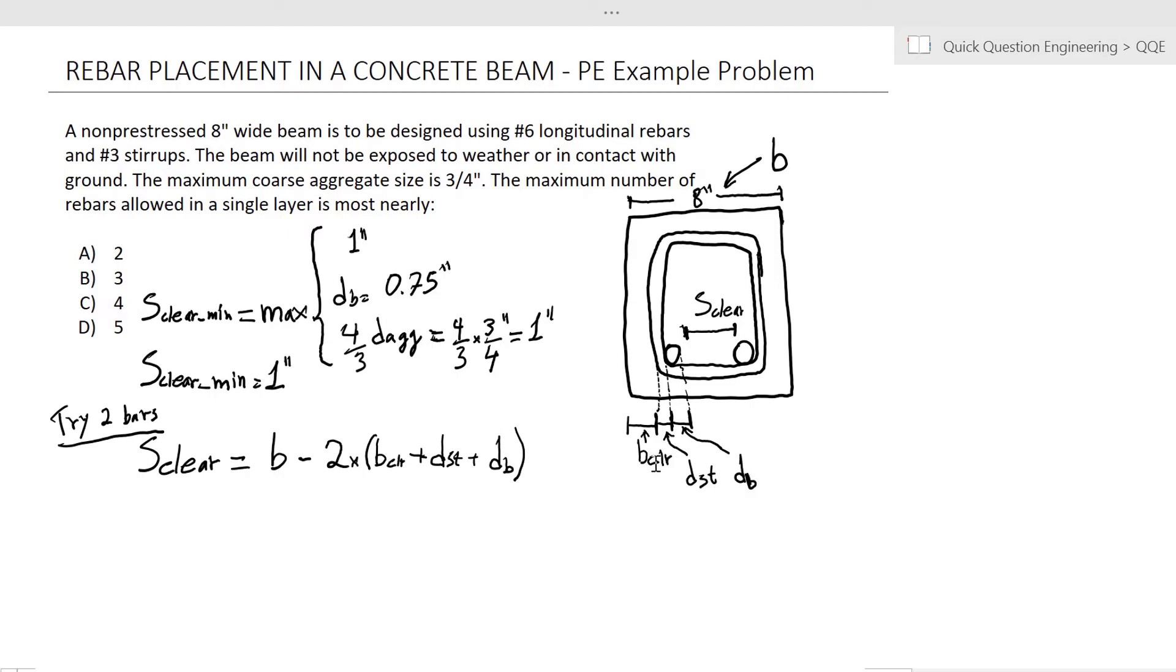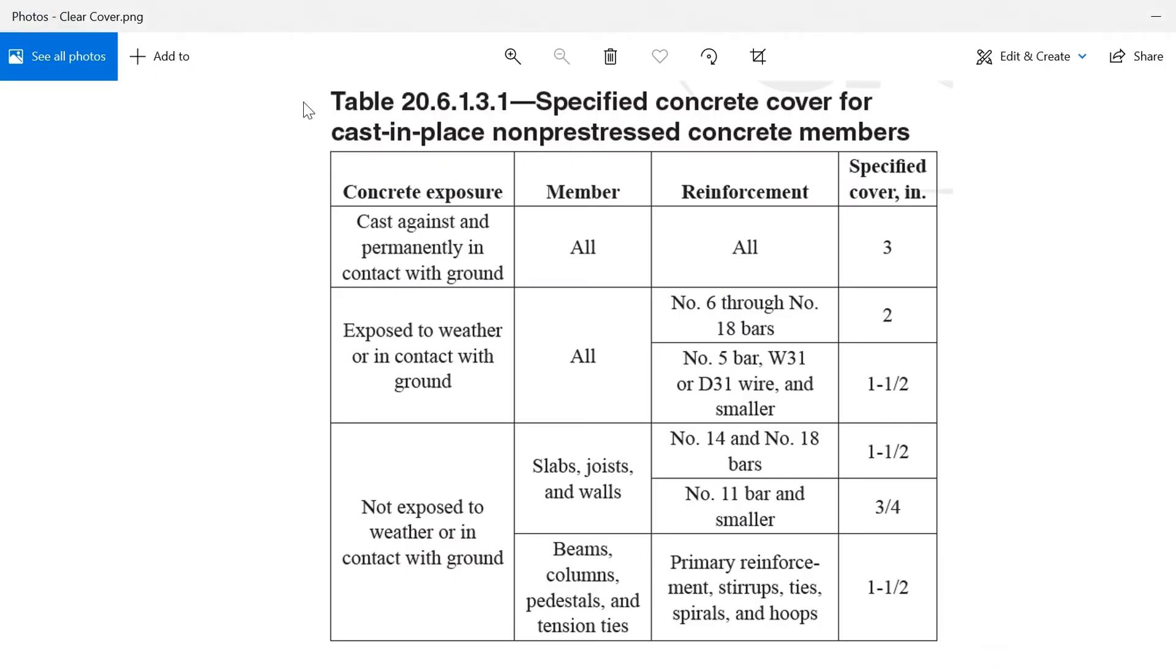For the clear cover, the problem states that the beam will not be exposed to weather or in contact with ground, which makes this problem just a little bit harder in the sense that the clear cover is not given right away. To find out what the clear cover is, we go to this table in ACI 318-14, and we can see here that for rebars not exposed to weather or in contact with ground and used for beams as the primary reinforcement or stirrups, the clear cover is 1.5 inches. We are using number 6 rebars and number 3 stirrups, so this would be our clear cover.